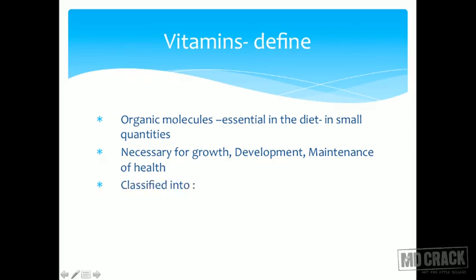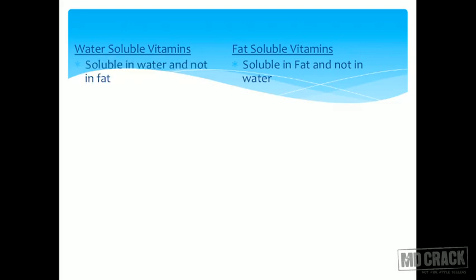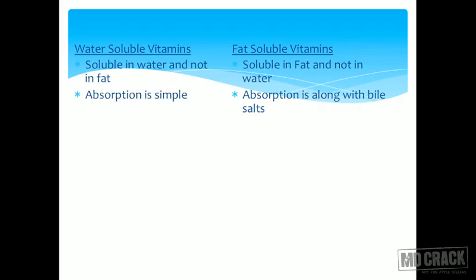Vitamins are generally classified into fat-soluble and water-soluble vitamins. The key difference is that fat-soluble vitamins require bile salts for their absorption from the intestine. So proper liver and gallbladder functioning is required for the absorption of fat-soluble vitamins, whereas for water-soluble vitamins — with the exception of vitamin B12 — absorption is quite simple.